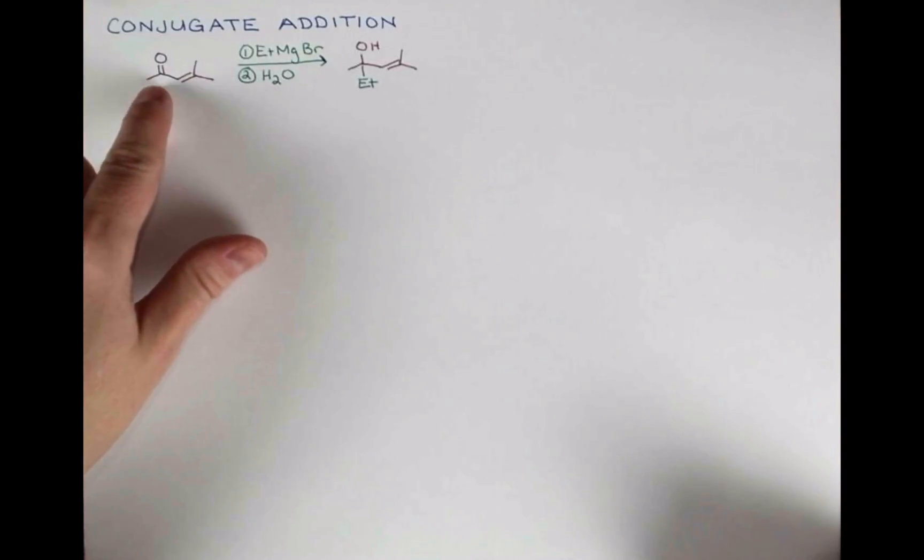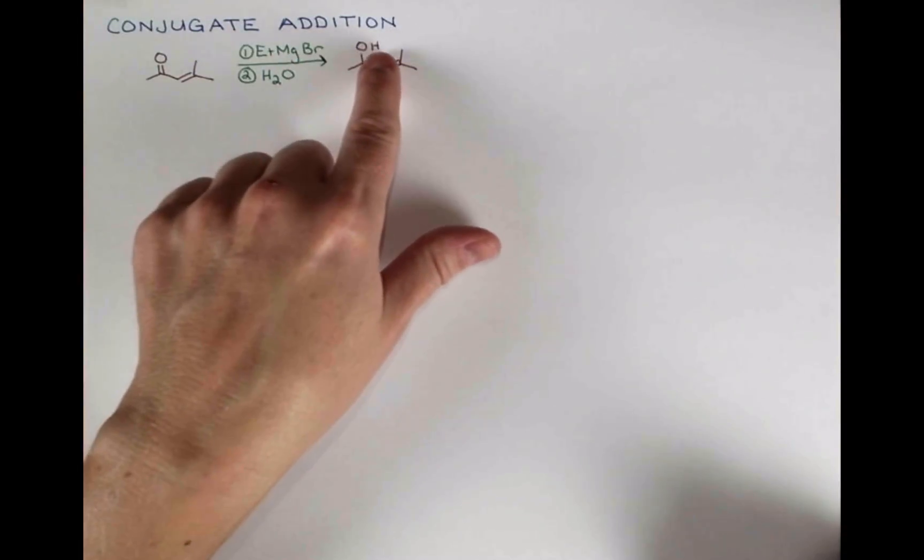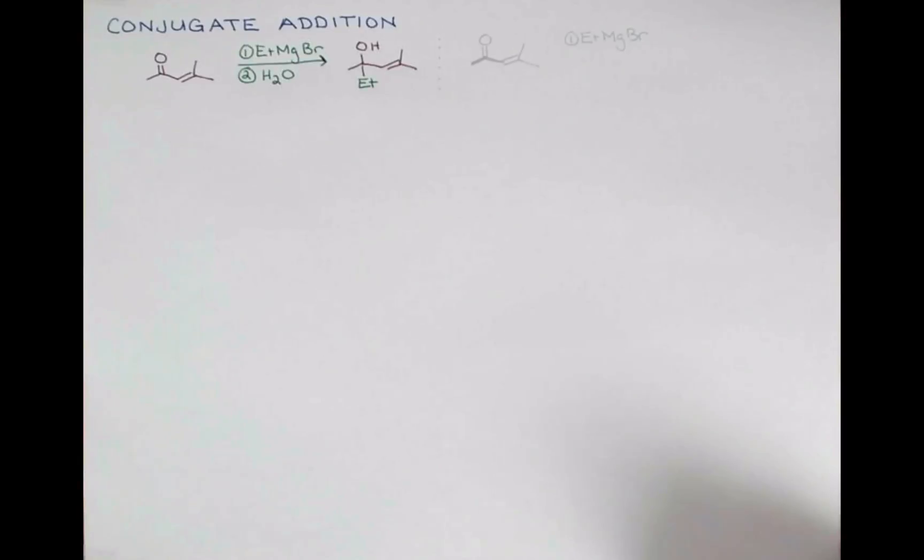The Grignard acts as a nucleophile here, the electrons push up onto oxygen, we get an alkoxide which we protonate in the second step with water to make the alcohol.